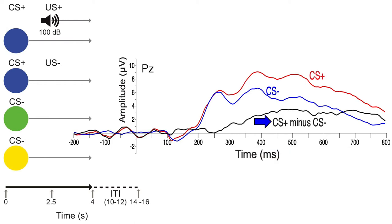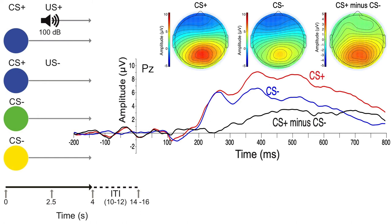Felix also made a difference wave to show the time course of the brain's differential response to CS plus versus CS minus. This difference wave can't exceed zero until the brain has determined whether or not a given stimulus is associated with the noise burst. You can see that this occurs within 300 milliseconds of stimulus onset, even though the noise burst doesn't occur until 2.5 seconds later. The LPP was largest at the PZ electrode site.